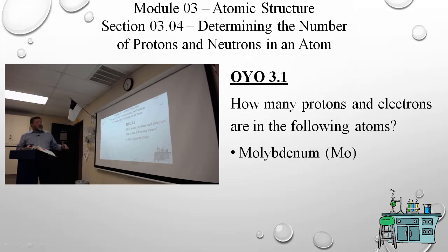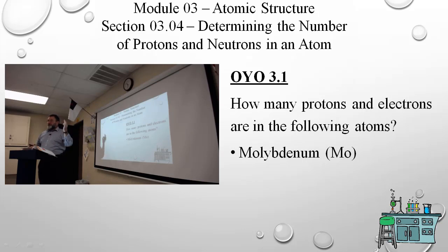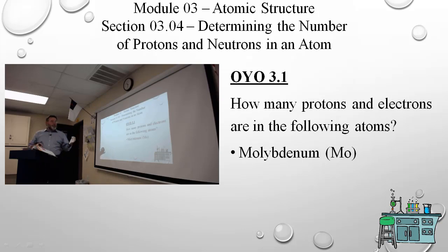On your own 3-1 asks: how many protons and electrons are in the following atoms? It's asking for atoms, not ions, so the numbers are going to be the same, because protons have an equal number of electrons to have a net neutral charged atom. I'm not going to try to pronounce that — actually I will try, but I don't know that I'm right.